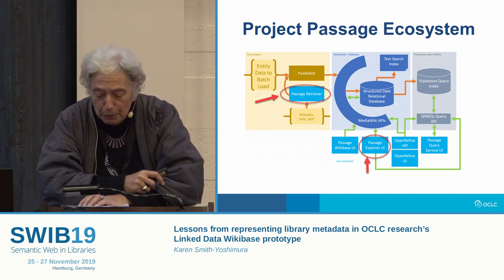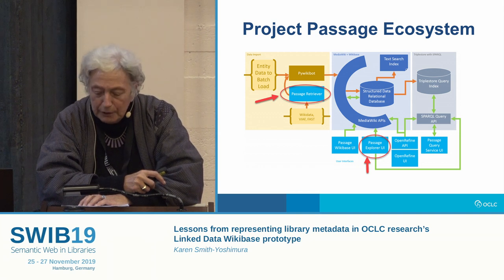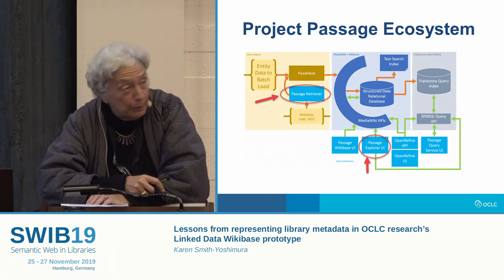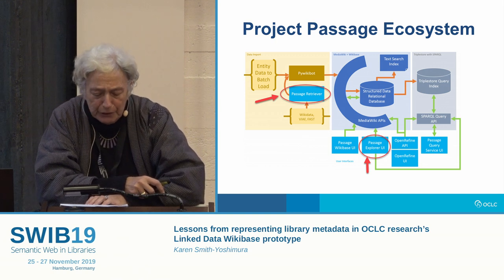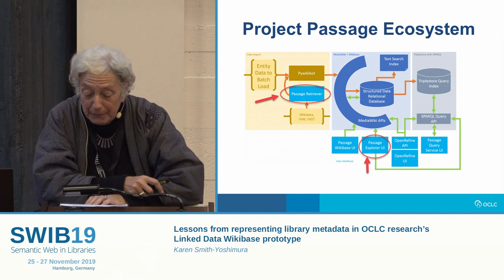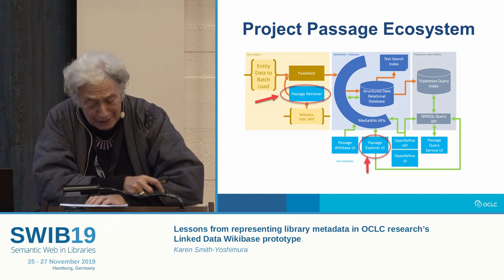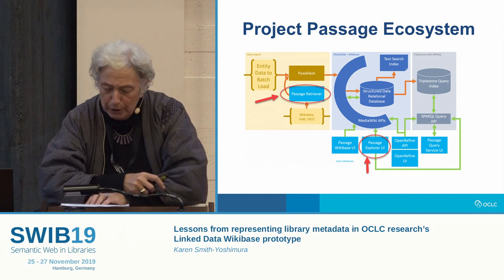These features were mostly hidden from human users so that metadata librarians were free to concentrate on the work they wanted to do and not the technical details of a linked data implementation. What I've highlighted here with the red arrows are two functions we added in response to feedback from our Project Passage participants: a retriever to import data from other sources, and an explorer interface so pilot participants could see the impact of the relationships they added as part of their workflow.